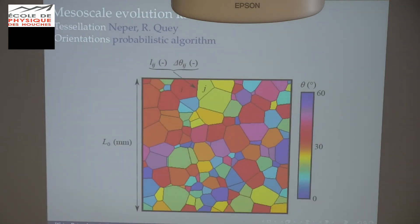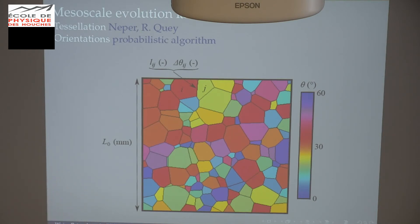Here is the method. We start with some Voronoi tessellation using NEPER developed by Quey, and affect some crystal orientation to it. I need to know the lengths of each grain boundary. From the crystal orientation I can infer the crystal misorientation between two grains. The system is completely dimensionless — the only physical dimension is the length of the square of the tessellation, which is the only real physical length.